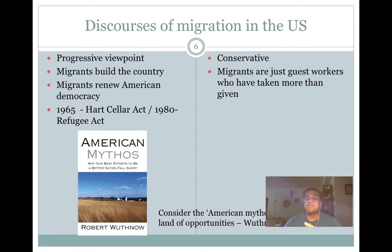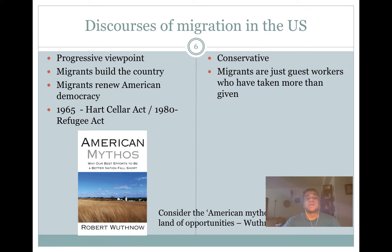Two important pieces of legislation to research: the 1965 Hart-Celler Act is landmark legislation that lifted restrictions on migration from Asia and Africa — prior to this, non-white migration was heavily restricted, and post-1965 that ban was lifted. In the context of the refugee crisis, the 1980 Refugee Act is also very important and continues to guide much of the policy-making and legislation in the country today.